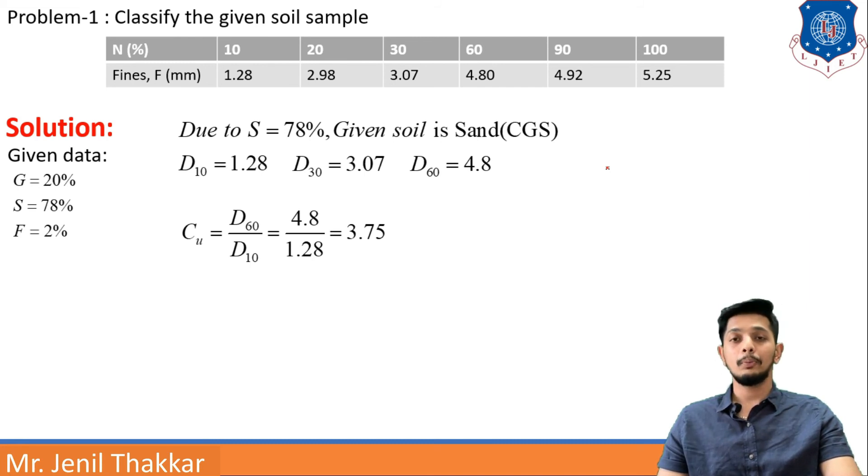Now we will find out Cu by doing D60 by D10. Now D60 is 4.8, D10 is 1.28. So putting both the values I am getting Cu at 3.75. Cu and Cc both are unitless, do remember that Cu and Cc both are unitless.